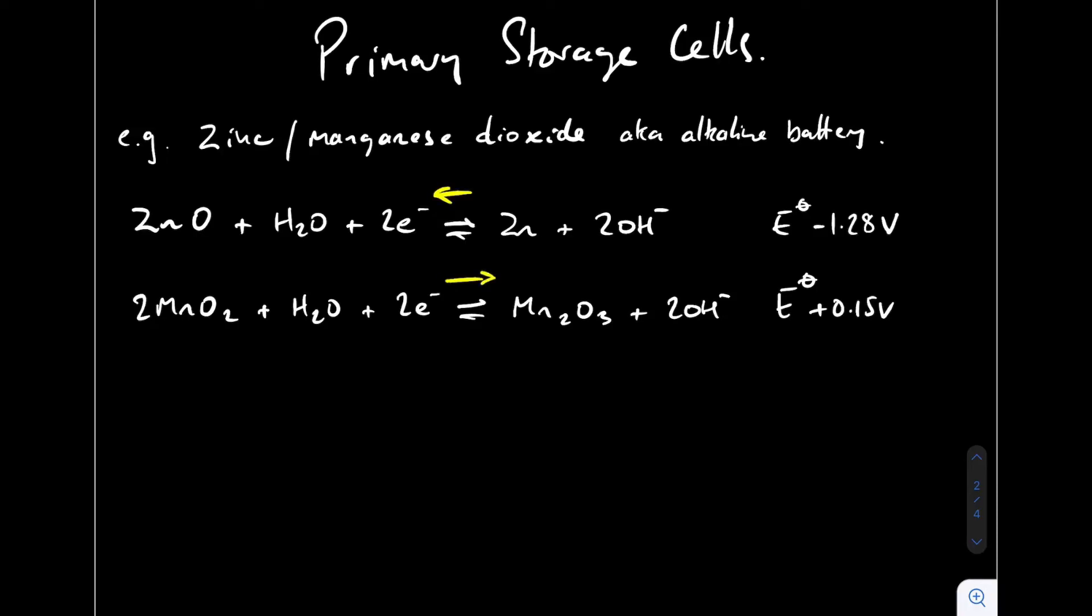Now we need to work out what the overall equation would be for the cell when it operates, when it discharges. All we need to do is add this equation running left to right to this equation running right to left. We've got two electrons in each one, so we don't need to multiply any of them out.